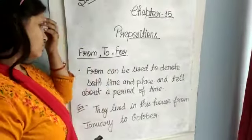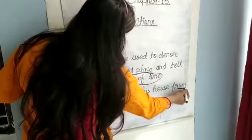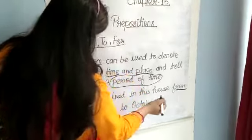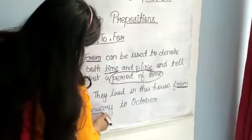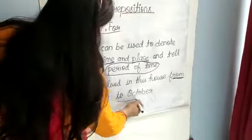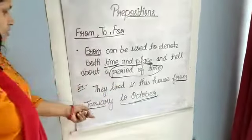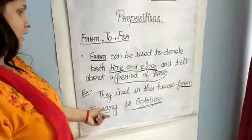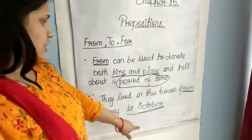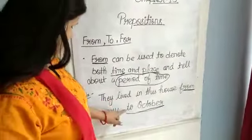From 'from', we know what period of time is being referred to. For example: they lived in this house from January to October. Here, 'from' and 'to' are used together to show a time period — from January to October.